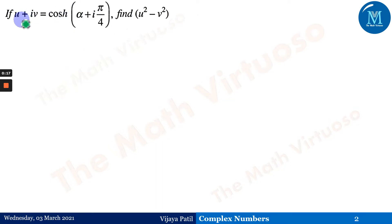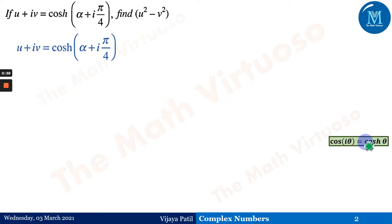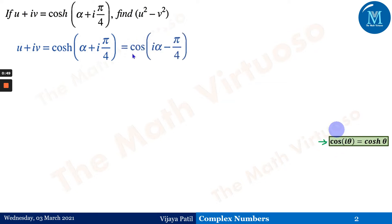The first question: if u + iv = cosh(α + i·π/4), then find u² - v². Now, u + iv = cosh(α + i·π/4). If you observe, cos(iθ) = cosh(θ), and this is the relation between circular and hyperbolic functions.